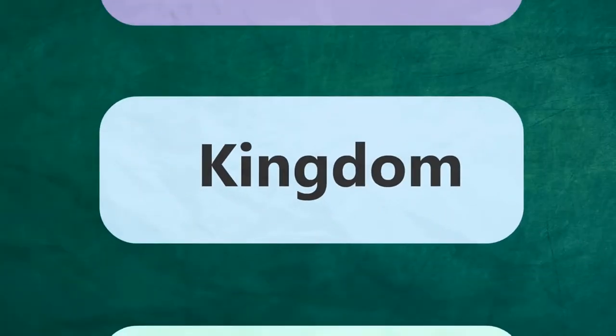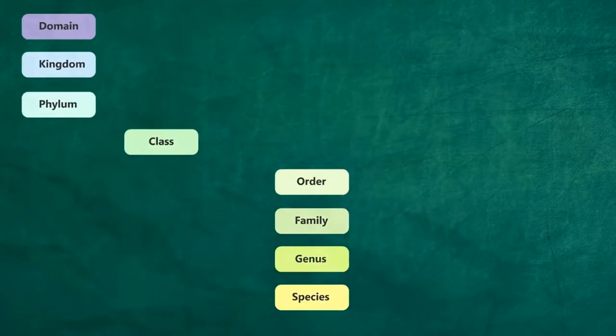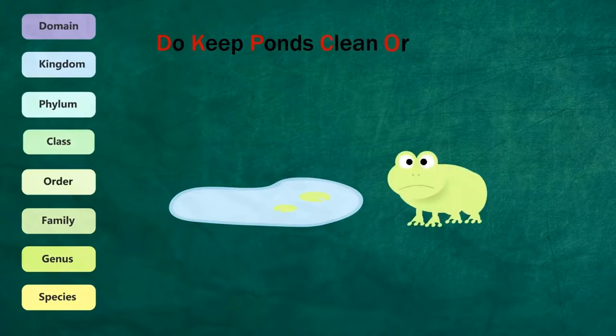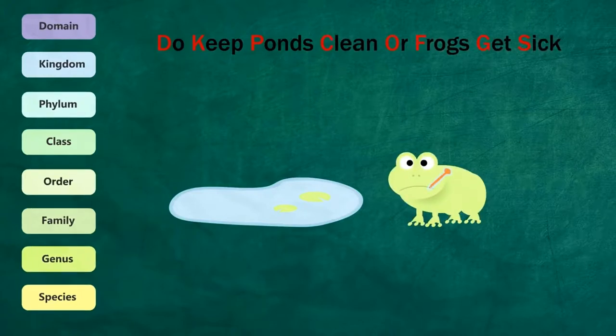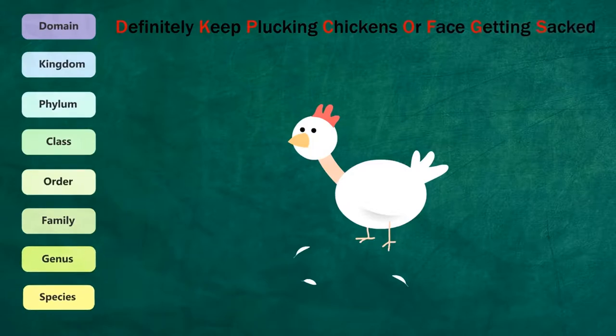Kingdom is the second highest rank below the rank of domain in the sequence of classification. Remember that little rhyme? Do keep ponds clean or frogs get sick? Or you might prefer this one: definitely keep plucking chickens or face getting sacked.